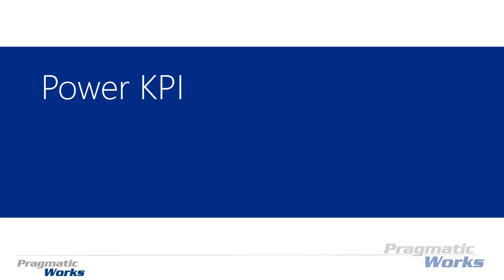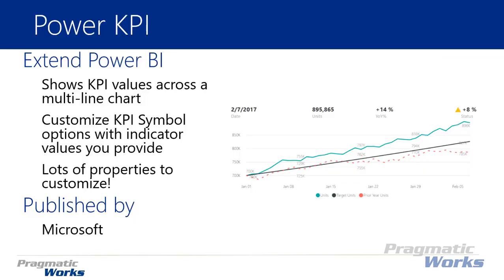Welcome back to the Power BI custom visuals course. In this module we're going to be looking at the Power KPI. The Power KPI is a unique visual in that it allows you to see a KPI value across a trend line. It has a multi-line chart where you can look at multiple values at once across time, though you can also look at categorical data as well.